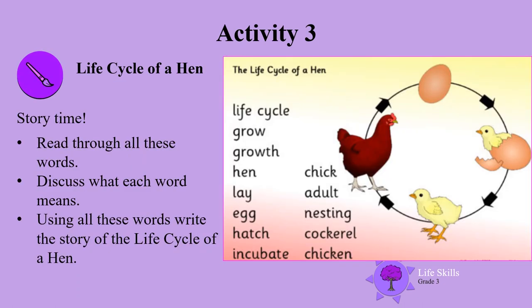Activity 3. Life cycle of a hen. Remember, a hen is not a mammal because mammals give birth to live babies. Let's read the words on the diagram: life cycle, grow, growth, hen, lay, egg, hatch, incubate, chick, adult, nesting, cockerel, chicken.